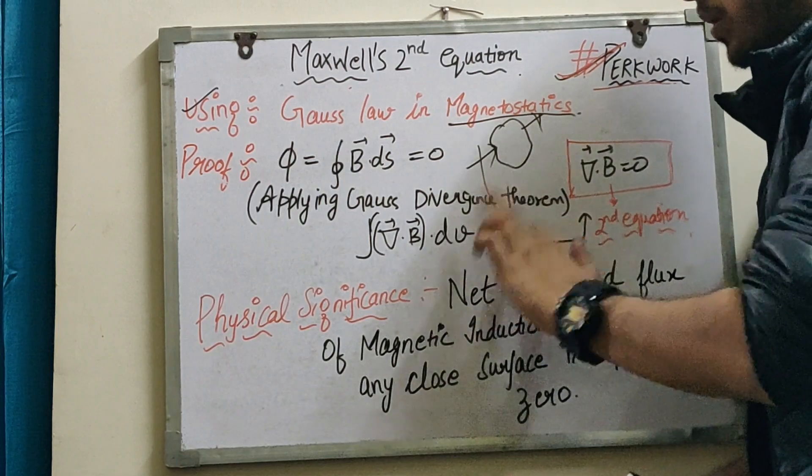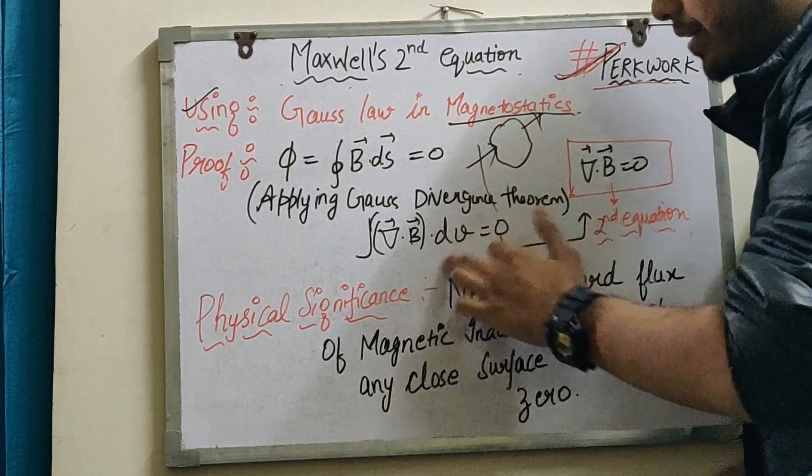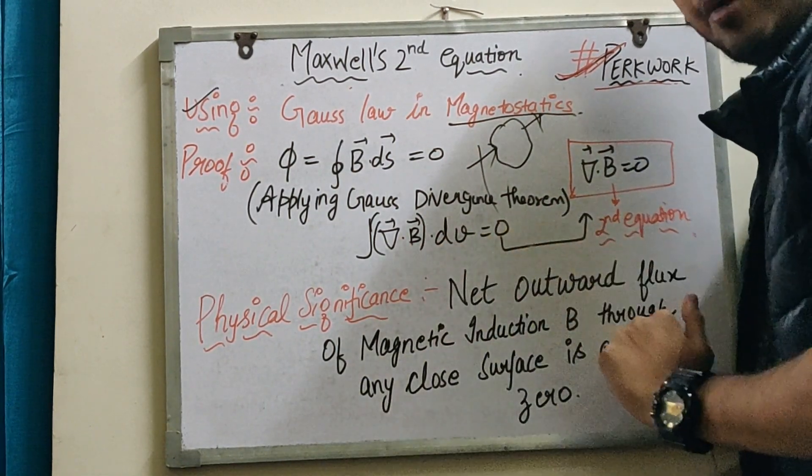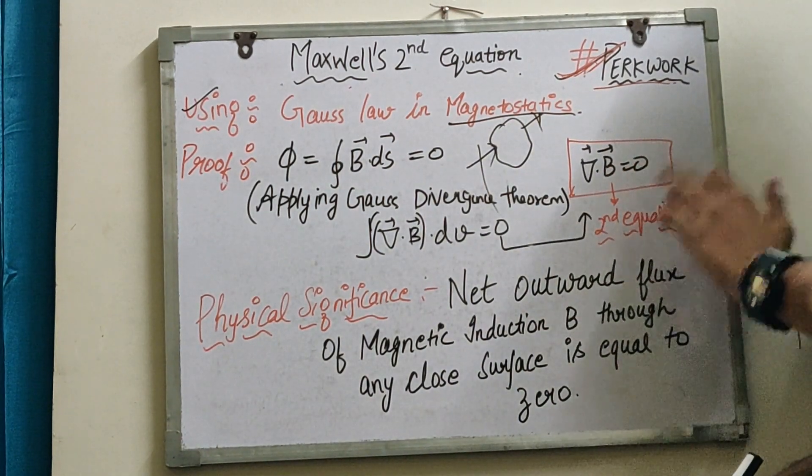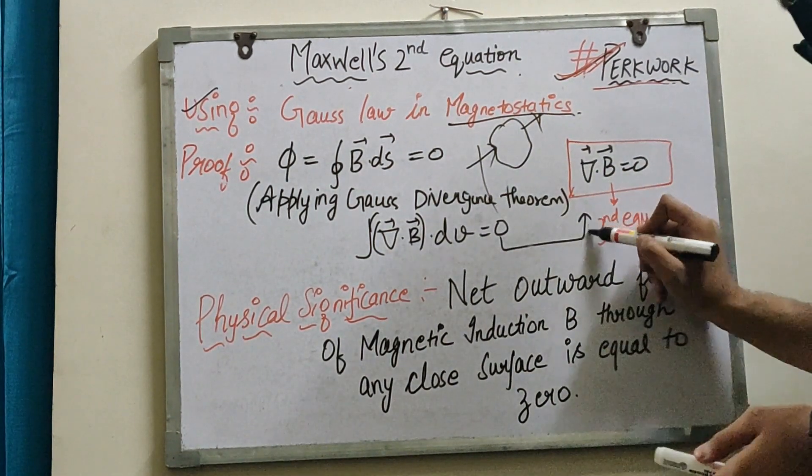Since ∫del·B dv = 0, and dv cannot be zero, therefore del·B must equal zero. So del·B = 0, which is Maxwell's second equation.